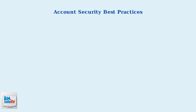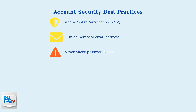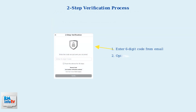Account security is crucial for protecting your Roblox account. There are three essential security practices every player should follow. First, enable two-step verification, also known as 2SV — this adds an extra layer of security to your account. Second, link a personal email address to your account, which is essential for password recovery and enabling 2SV. Third, never share your password, cookies, or 2SV codes with anyone — Roblox employees will never ask for this information. On the two-step verification screen, you'll enter a six-digit code sent to your email, and you can choose to trust the device for 30 days.